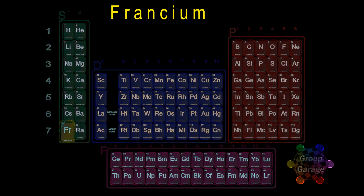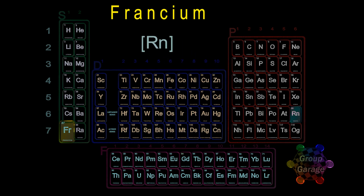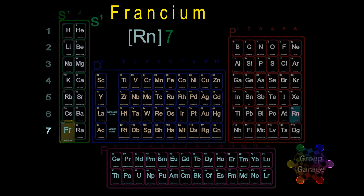Highlight francium, and since this is the first element in the row, there are no additional elements left to highlight. From the previous row, period 6, we write the noble gas radon, shorthand Rn. And since this is the first element in the S block, for francium we simply write the period number 7 followed by the one electron in the S shell, S1.